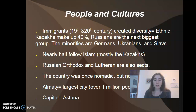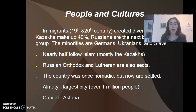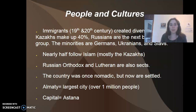The ethnic Kazakhs actually only make up about 40 percent of the population; next are the Russians, and then minorities include Germans, Ukrainians, and Slavs. Nearly half of the population follows Islam — mostly the Kazakhs — while Russian Orthodox and Lutheran denominations are also present. The country was once nomadic but is now settled. The largest city is Almaty and the capital is Astana.